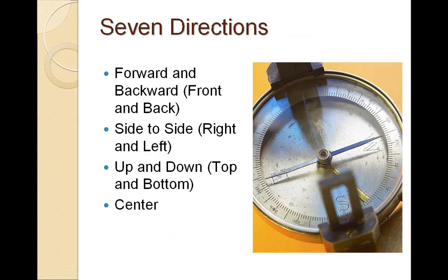We're going to look at an application of this concept using the seven sacred directions — a concept from Native American traditions that's present around the world. If you think of where you stand, there are really only six basic directions you can go: forward and backward, right and left, or up and down. And then the seventh direction is towards the center — the center point or starting point. You can also express this as north, south, east, west, up, or down. Some combination of those trajectories enables you to move in three-dimensional space.